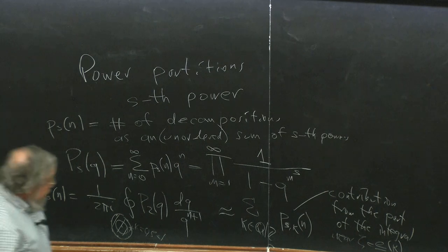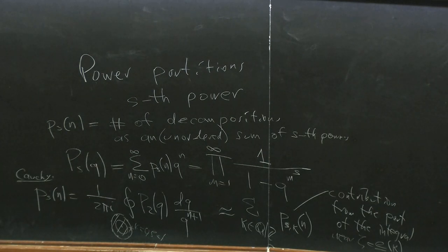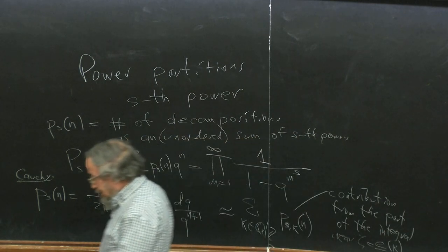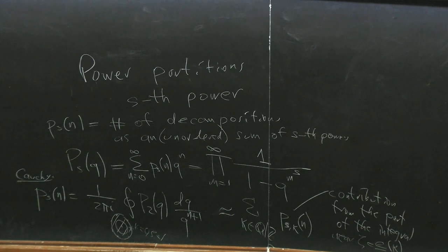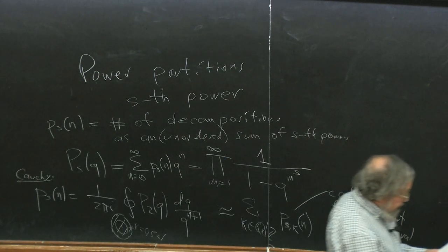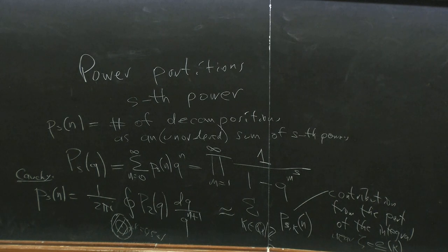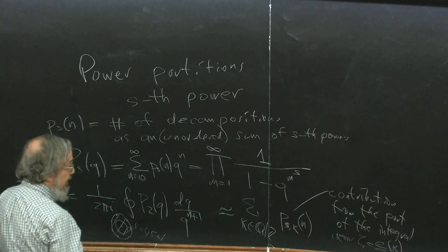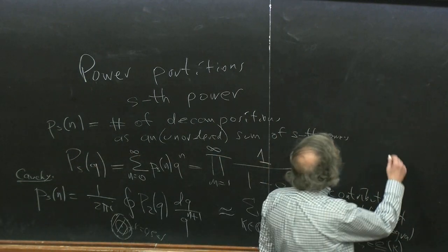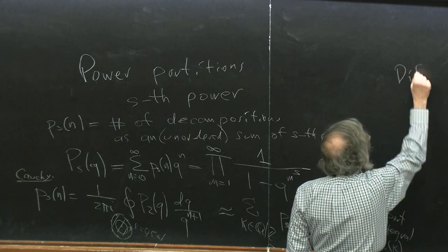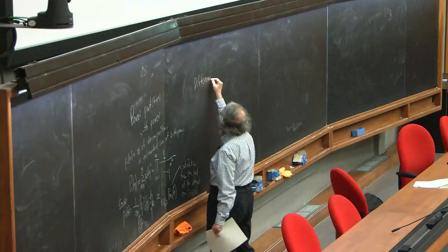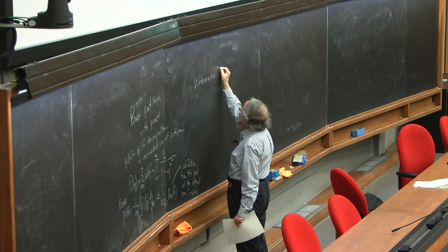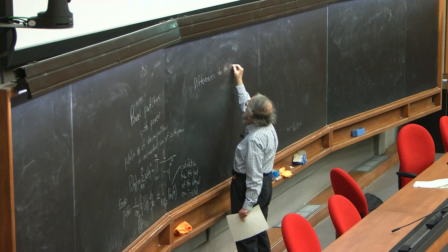The biggest contribution is always when κ=0 and ζ=1, but there are always contributions when κ=1/2 (ζ=-1), κ=1/4 (ζ=i), and so on. This is the basic circle method, known ever since the famous 1918 paper of Hardy and Ramanujan, and later used in famous papers by Hardy-Littlewood, Rademacher, Vinogradov, and many others.